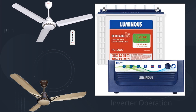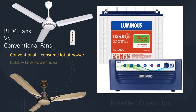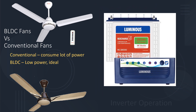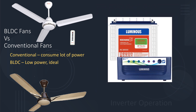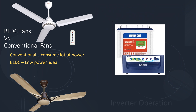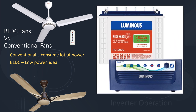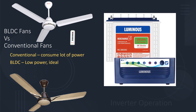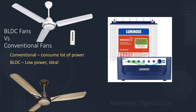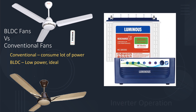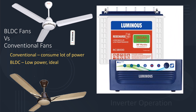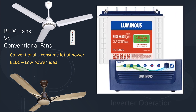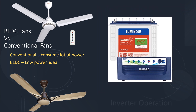Inverter operation. Conventional fans consume a lot of power from the inverter, thus draining the inverter battery faster. Besides, it is not easy to run more number of fans on low capacity inverters at the same time. BLDC fans on the other hand consume very low power, making them an ideal option to run multiple fans on low power inverters and on lower capacity batteries for longer time periods.